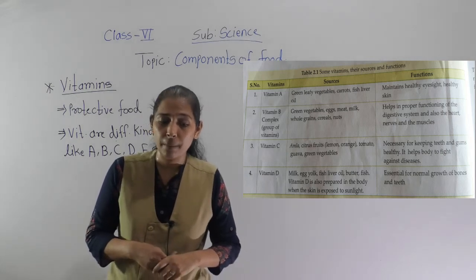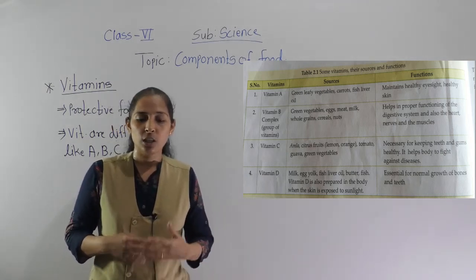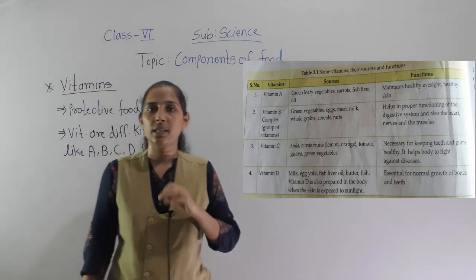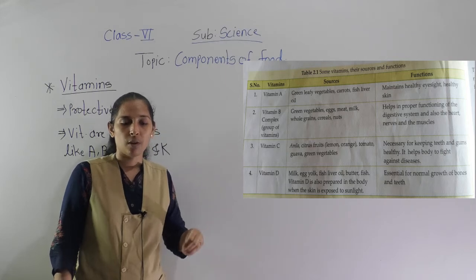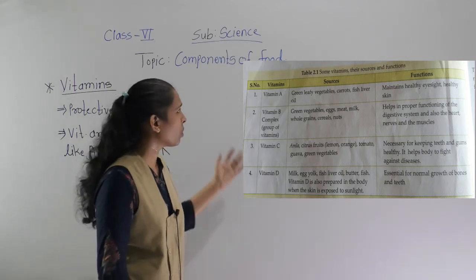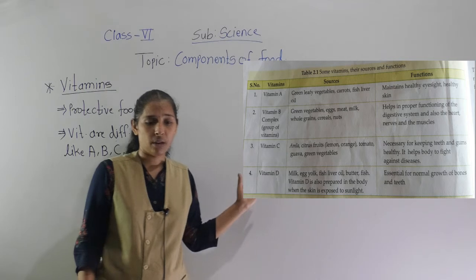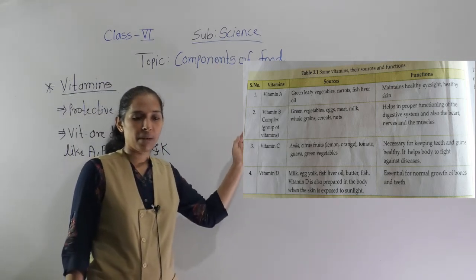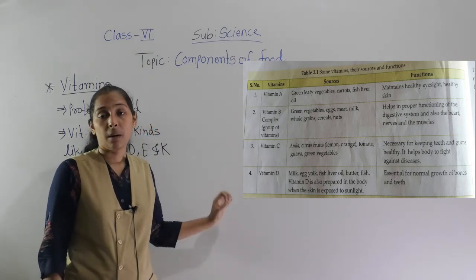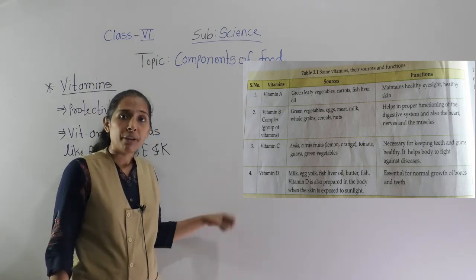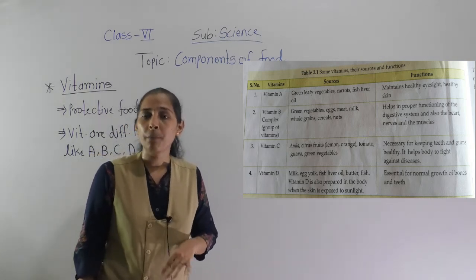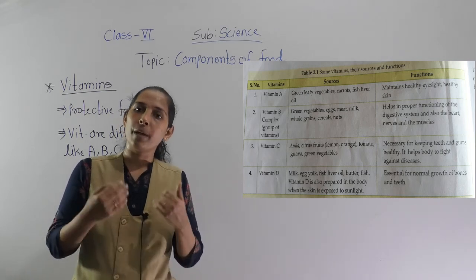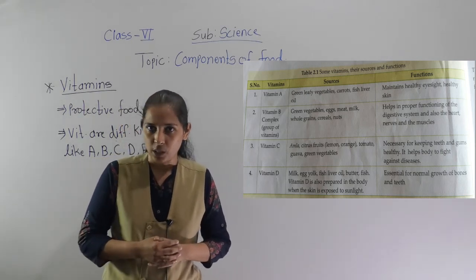The function of vitamin D is that it is essential for the normal growth of bones and teeth. Among all the vitamins discussed — A, B, C, and D — only vitamin D can be produced in our body through sunlight exposure. For all the remaining vitamins, we have to consume different types of food to obtain them.